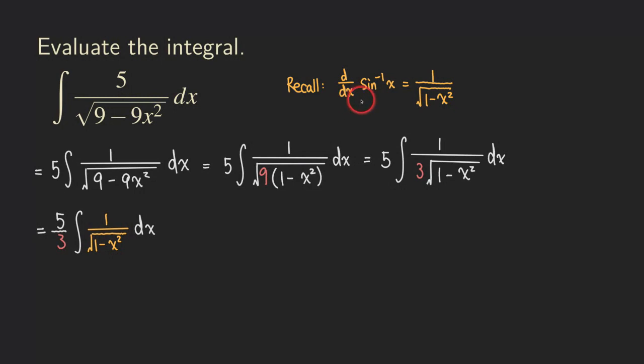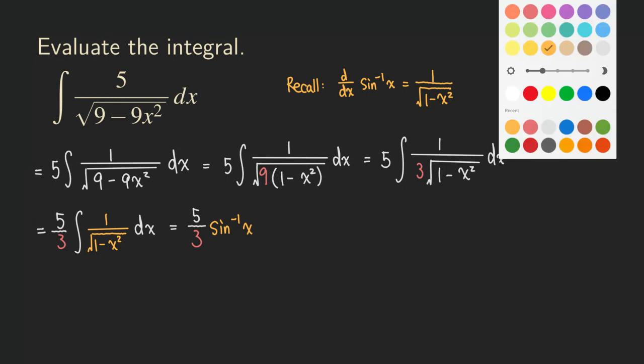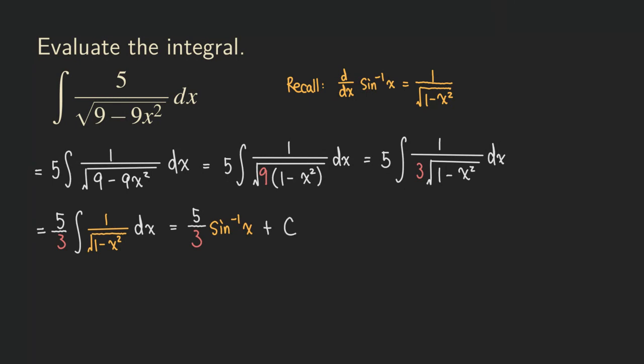Now from here, we know that when we take the derivative of the arcsine function, we are getting this 1 over square root of 1 minus x squared. So when we integrate this, we are going to get the arcsine function. Our answer will just be 5 over 3 times the arcsine function. Then we're good with this problem.